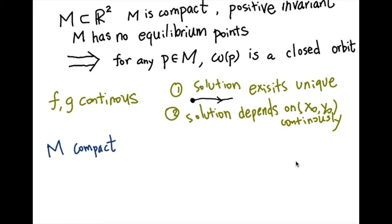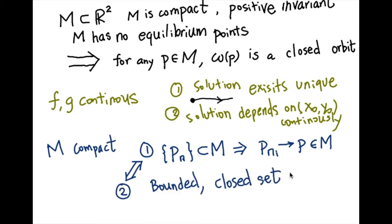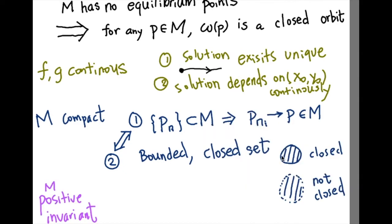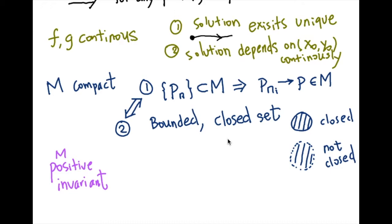Next I'll explain what it means for M to be compact. Compact means that for any sequence contained in M, there is a subsequence that converges to a point in M. An equivalent and more intuitive definition is a region in the plane that is bounded and closed. Bounded means the set does not go to infinity. A closed set includes its boundary — for example, a disk with its boundary included is closed, but a disk without its boundary is not closed. A bounded closed region in the plane is compact.